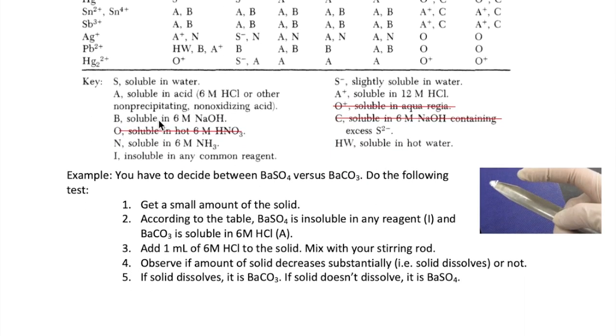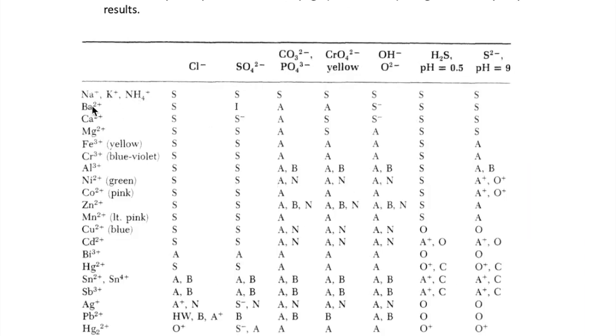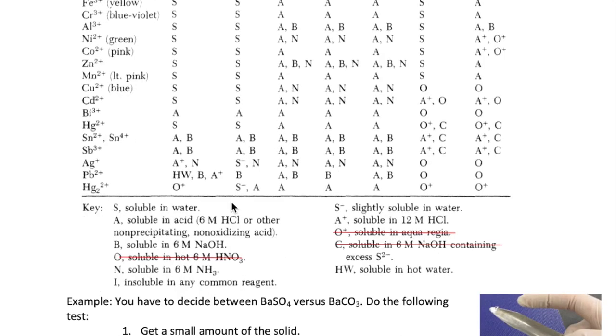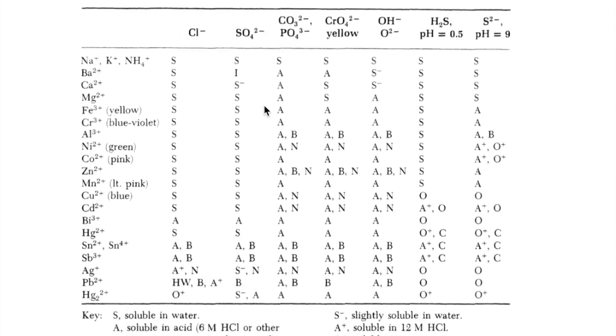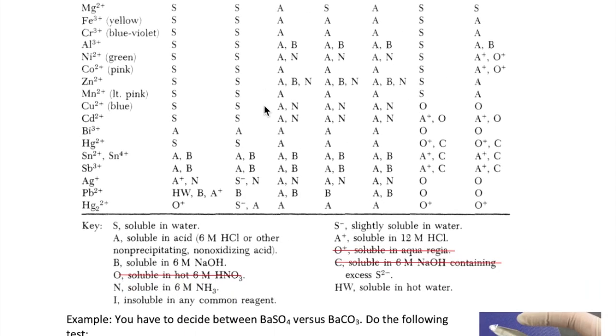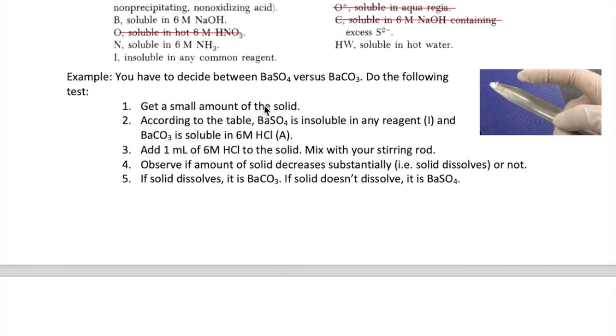For example, let's say you have a solid that could be either barium sulfate or barium carbonate. Looking at the table, we see that barium sulfate is insoluble in any common reagent, whereas barium carbonate is soluble in 6 molar HCl. The explanations for these letters are given down here in the key for the table. So if we want to determine the identity of our solid, the following steps can be used.